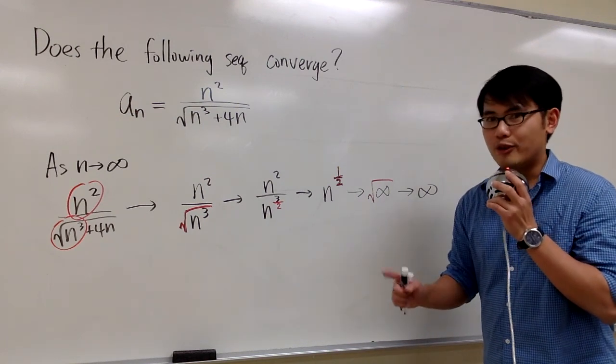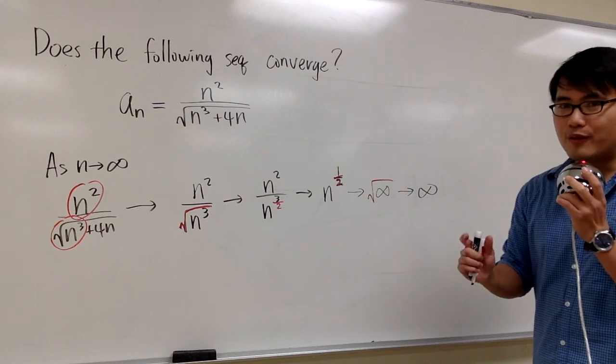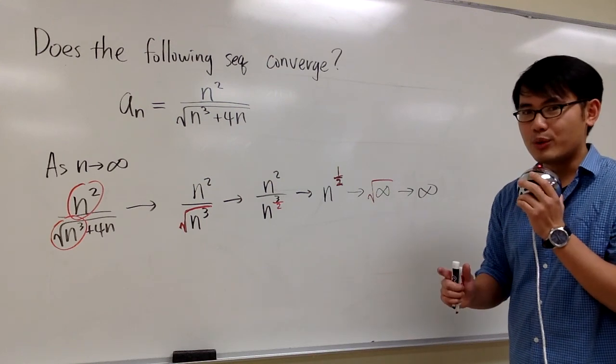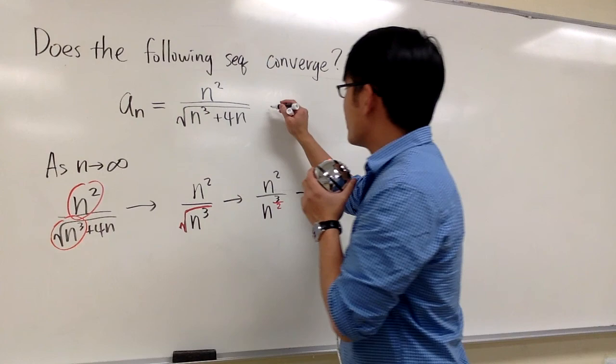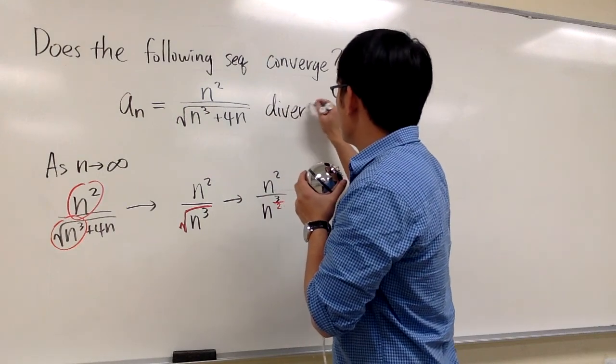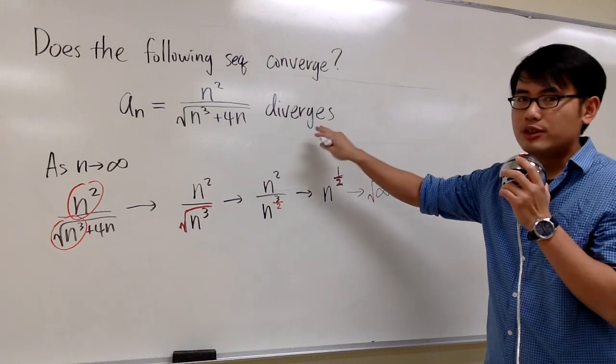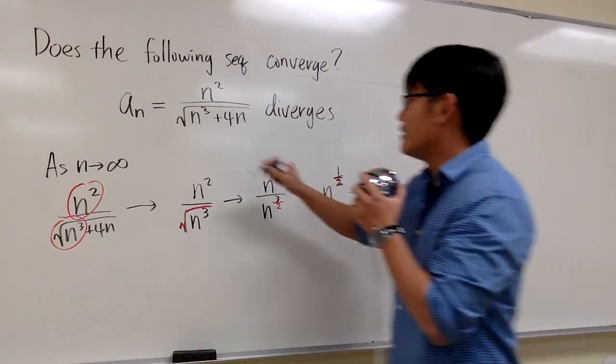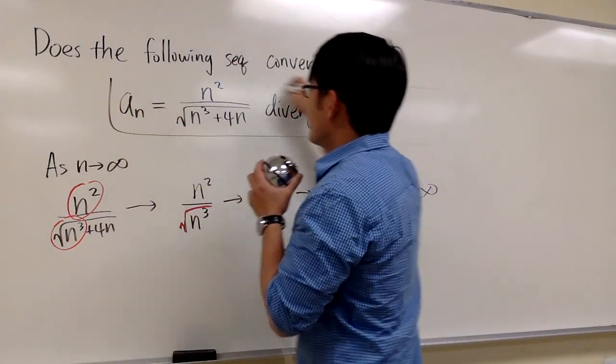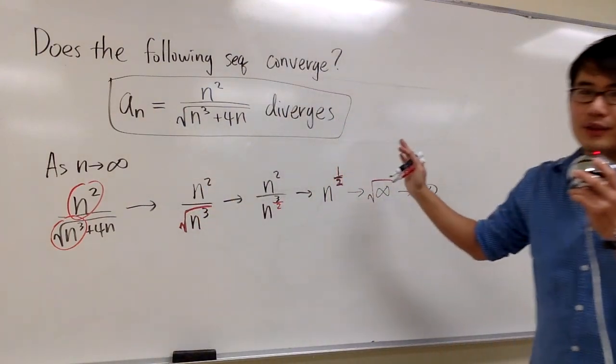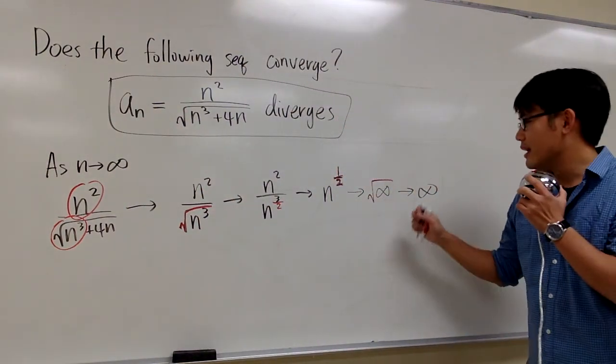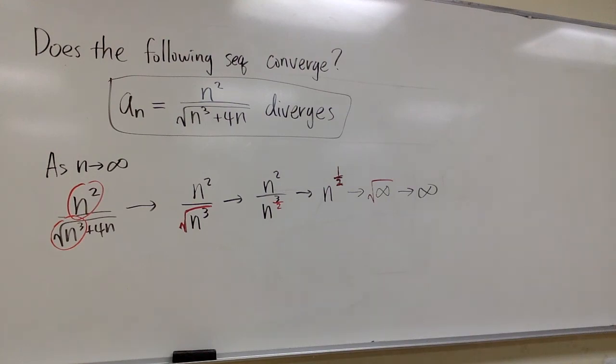You cannot say it converges to infinity, because convergence is only for finite values. This is infinity, so we say this diverges. You can say 'diverges to infinity,' that's fine. But you cannot say 'converges to infinity.' Convergence is only for finite numbers. Thank you.